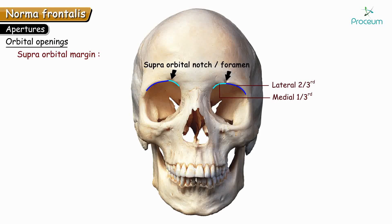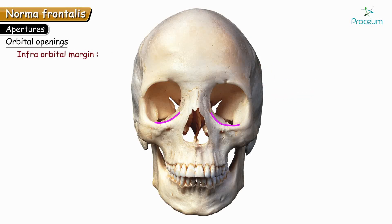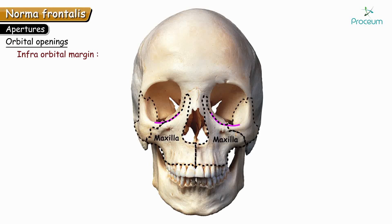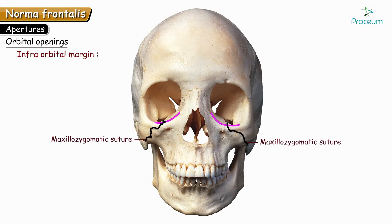The structures passing through the supra-orbital notch are the supra-orbital vessels and nerves. The infra-orbital margin is formed medially by the maxilla, and the lateral part is formed by the zygomatic bone. The junction between the maxilla and zygomatic bone is called the maxillo-zygomatic suture, which runs down obliquely separating the two bones.